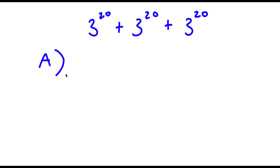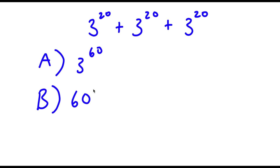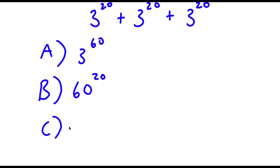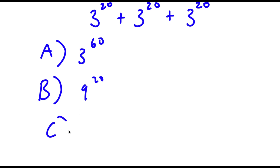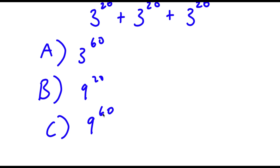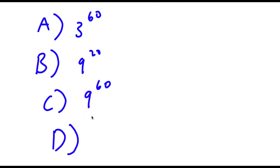For answer choice A, I have 3 to the power of 60. For answer choice B, I have 9 to the power of 20. For answer choice C, I have 9 to the power of 60. And for answer choice D, I have 3 to the power of 21.